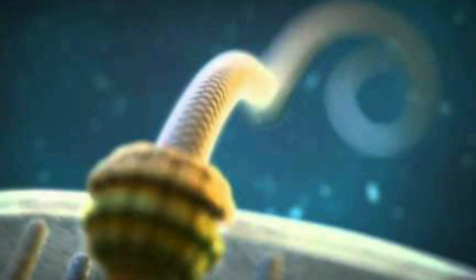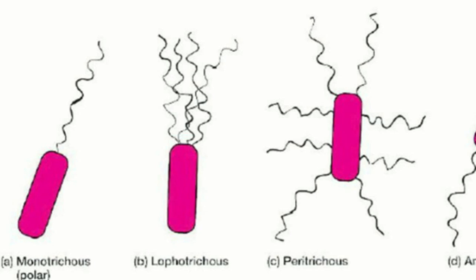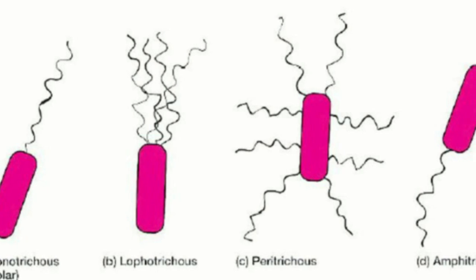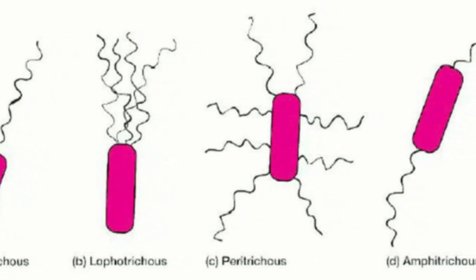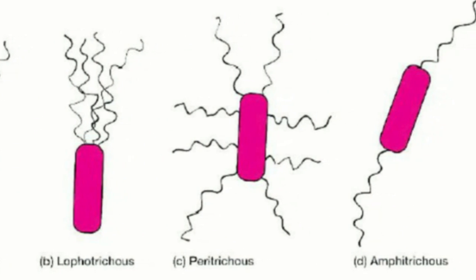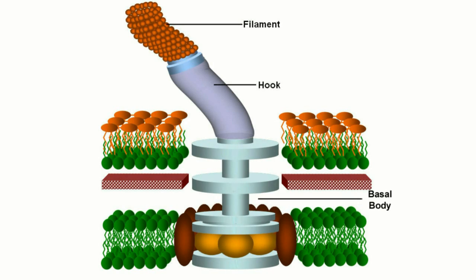Some bit of confusion regarding the bacterial flagellum is that there is not, in fact, a singular bacterial flagellum. There are actually various versions of them with different varieties of proteins, and not all of them require the same amount of proteins. In general, a bacterial flagellum consists of three parts: a filament, a hook, and a basal body. The basal body generally consists of a rod and a series of rings which make up the stator and rotor.